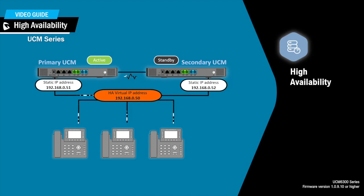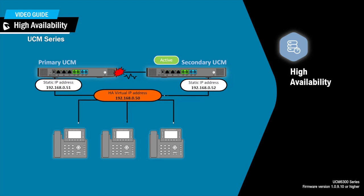The standby UCM will check the active UCM status periodically by sending a heartbeat message to the active UCM. If the active UCM is under normal working conditions, it will respond after receiving the heartbeat request. By default, the heartbeat timeout period is 7 seconds. If the active UCM runs into network or power issues, it will no longer respond to the heartbeat request. After the heartbeat period times out, the standby UCM will consider the active UCM to be down and promote itself to active.